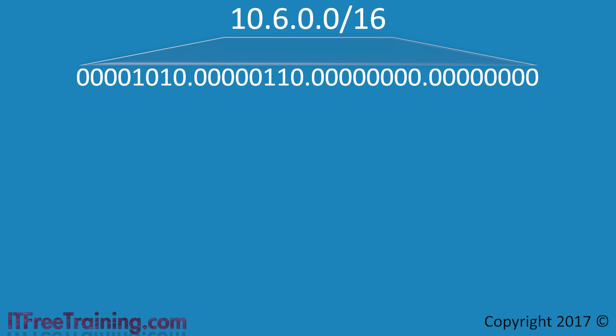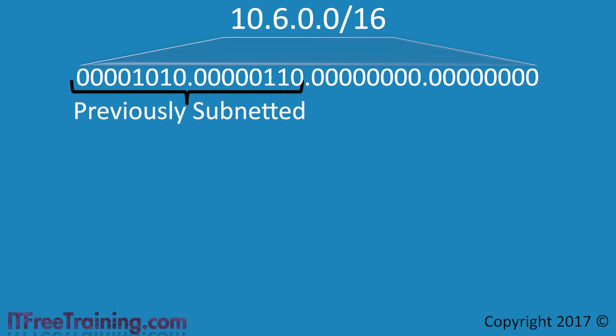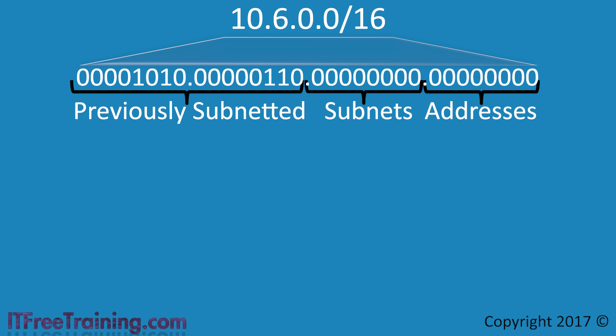This is a simple example, so no binary math is required, but to show the whole process I will first convert the given network to binary. The first 16 bits have already been subnetted — this is common practice. For example, a company may allocate IP addresses for regions around the world and give you a smaller part for an individual region. ISPs also assign a smaller part of their allocation to customers using subnetting. The next 8 bits are free to be allocated by the administrator, and the last 8 bits can be used for host addresses.